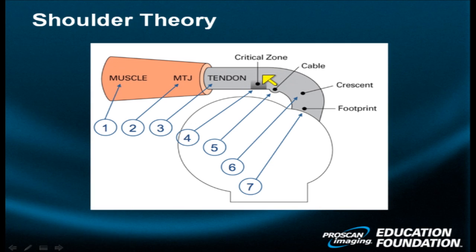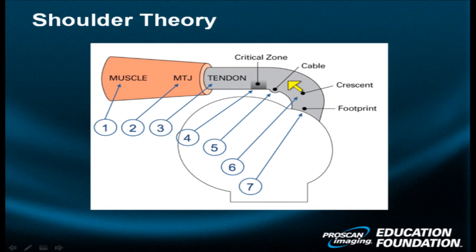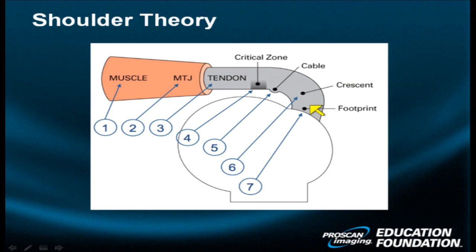There's an area of fibrous condensation or thickening of the cuff, of variable thickness, size, and width, known as the cable portion of the cuff. The cuff continues on as an arcuate structure, and this arcuate segment distal to the cable — or more lateral to the cable — is called the crescent. Finally, the cuff inserts on the humerus, in this case the greater tuberosity, as a footplate or footprint.